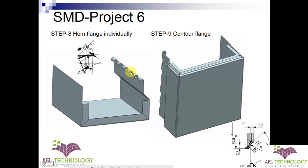Here we have 6 hem flanges in a linear pattern, but unfortunately we cannot create this using one feature. This is a limitation of UG NX Extended and we have to create each hem flange individually. So we will get 7 individual hem flange features.